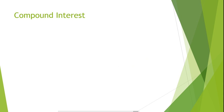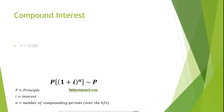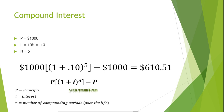Suppose you invested $1,000 in an investment that earned compound interest at a rate of 10%. How much interest would you earn if you held this investment for five years? Let's plug our figures into the compound interest formula. Note: if your interest rate is expressed as a percentage, it needs to be divided by 100 to be expressed as a decimal. So we divide 10% by 100, giving us a rate of 0.10.